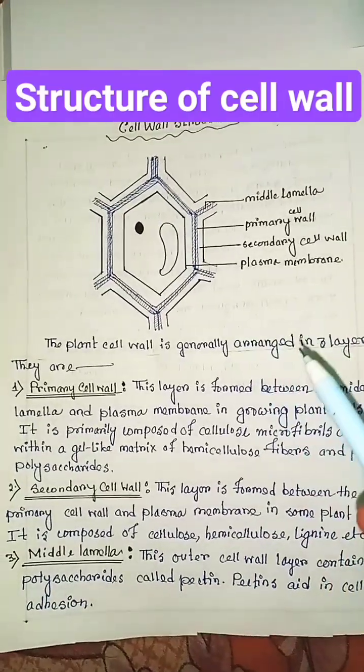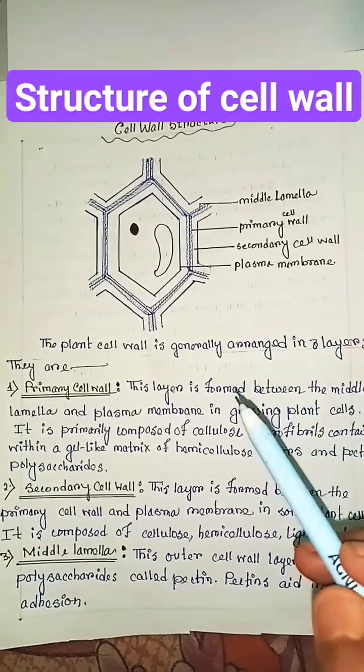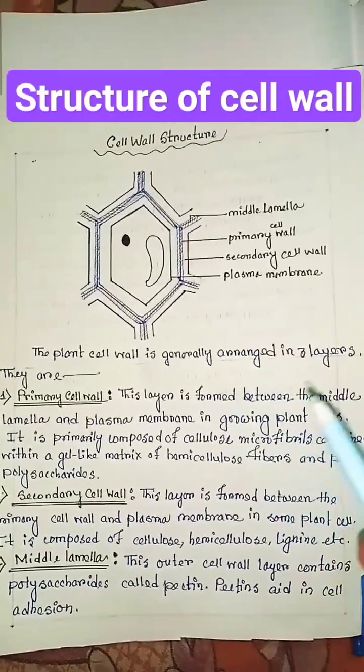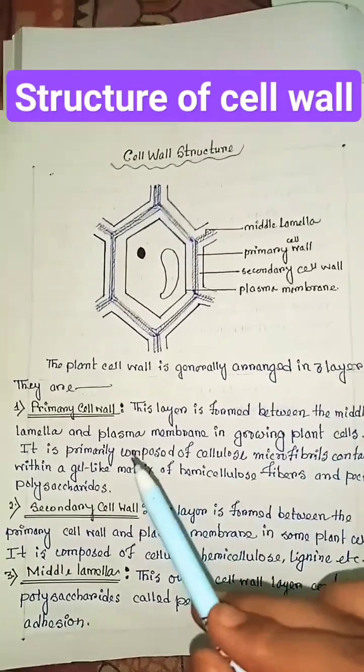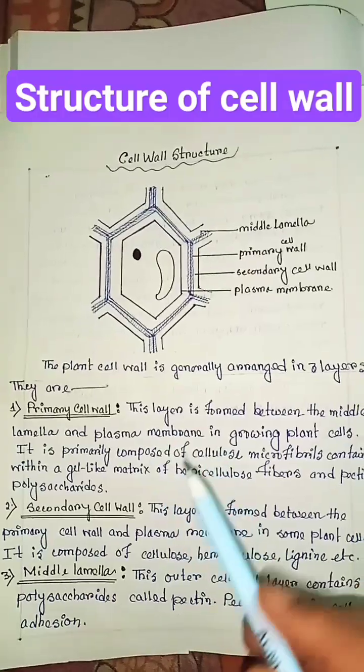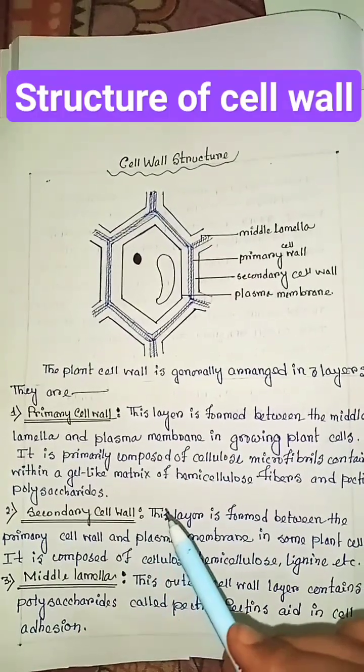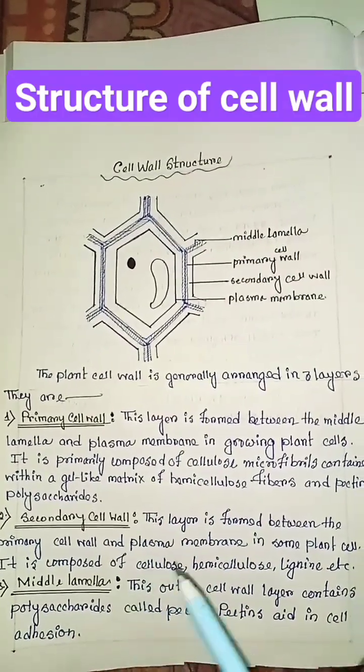Structure of cell wall. The plant cell wall is generally arranged in three layers. They are primary cell wall, secondary cell wall, and middle lamella.